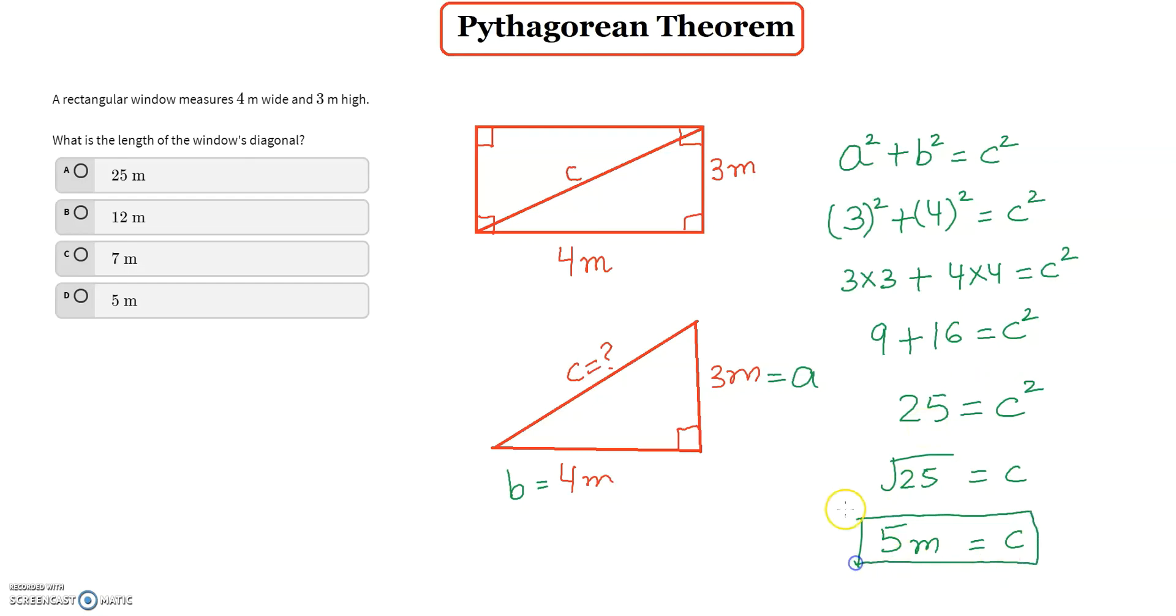And we're going to check the options. So we have a equals to 25 meters, b equals to 12 meters, and the option c is equal to 7 meters, and d is 5 meters.